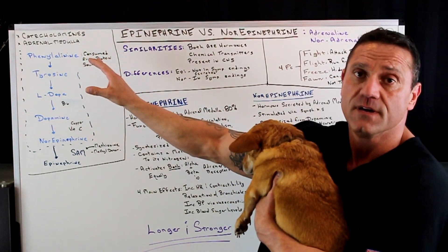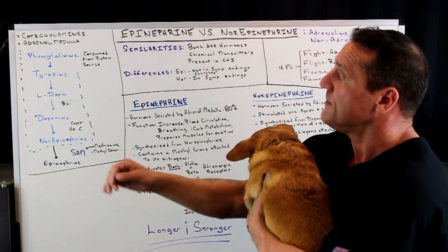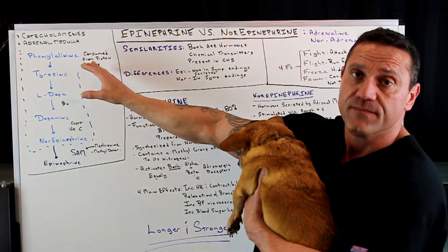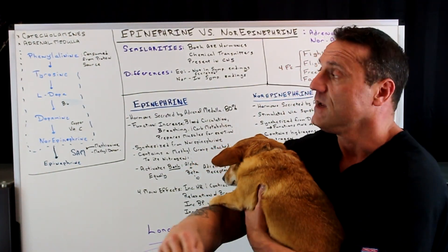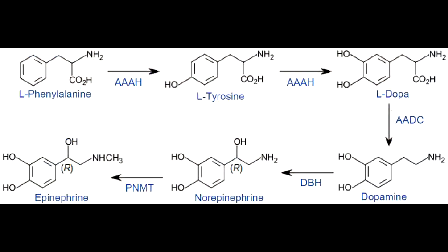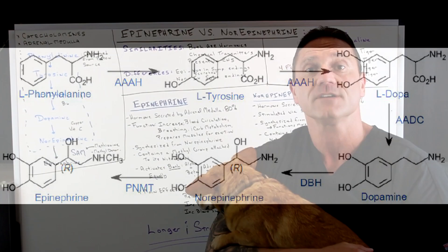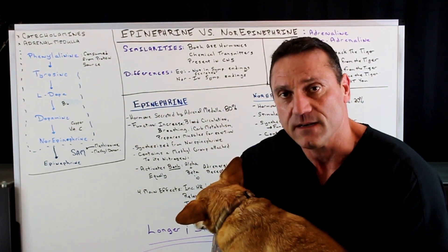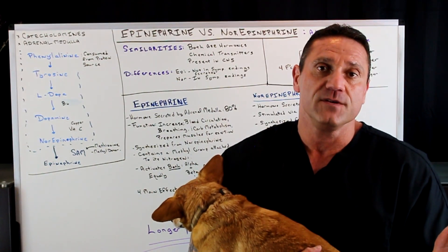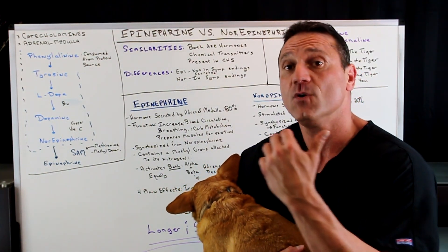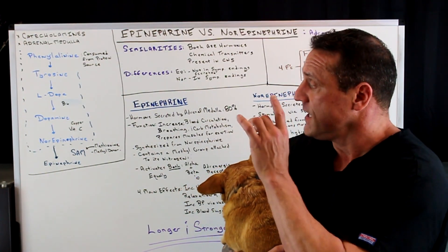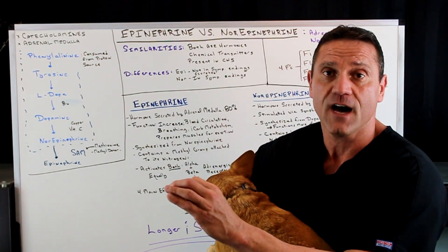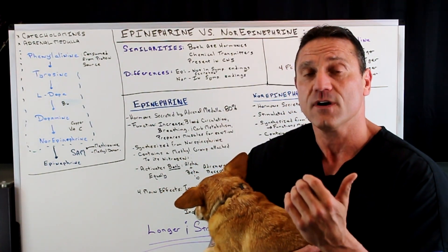They're both considered catecholamines and they start off with the amino acid phenylalanine. You need to eat a protein source in order to make these hormones. Phenylalanine from a protein source converts into tyrosine, which converts into L-DOPA, which converts with the help of vitamin B6 into dopamine. Dopamine is involved with movement and motivation, and it can get burned out in conditions like Parkinson's. Dopamine then, with the help of copper and vitamin C, gets converted to norepinephrine.